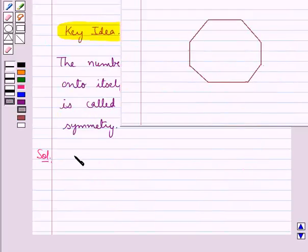Consider this figure. This is a regular octagon in which all sides and all angles are equal. Now this figure